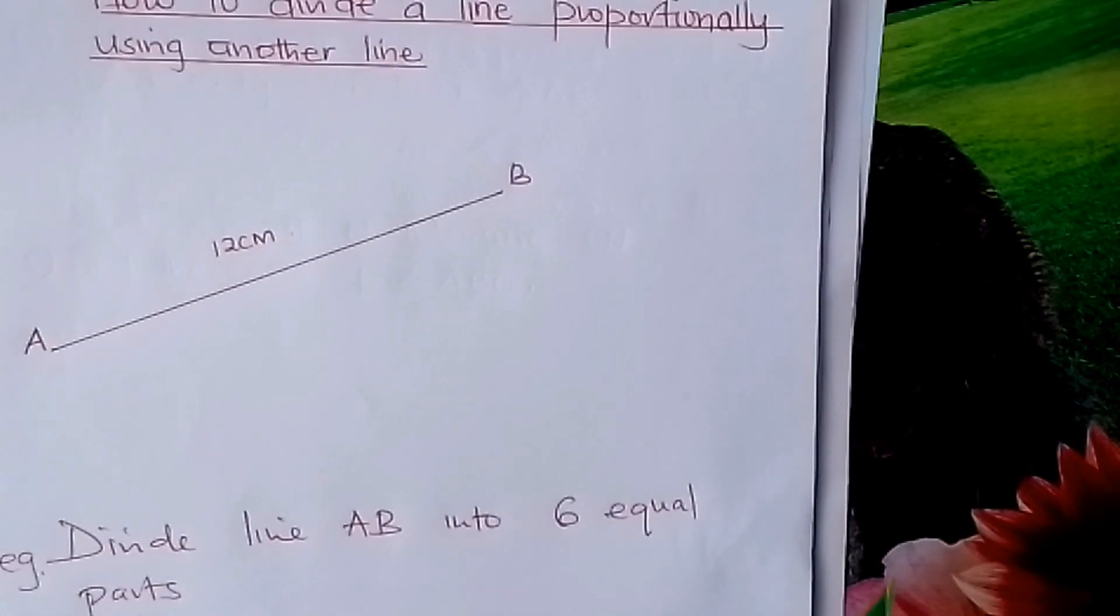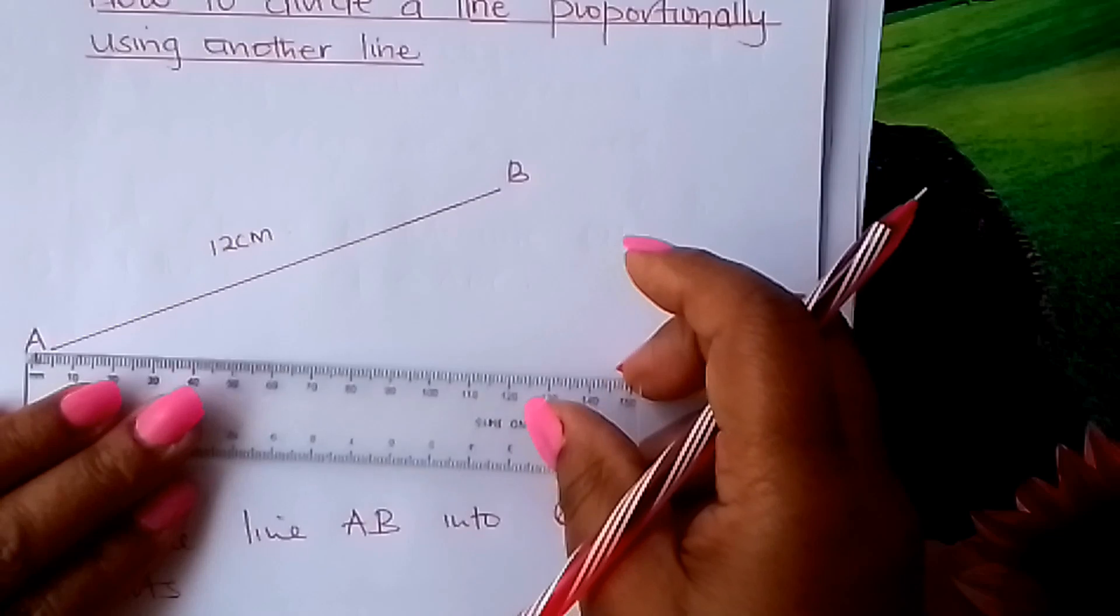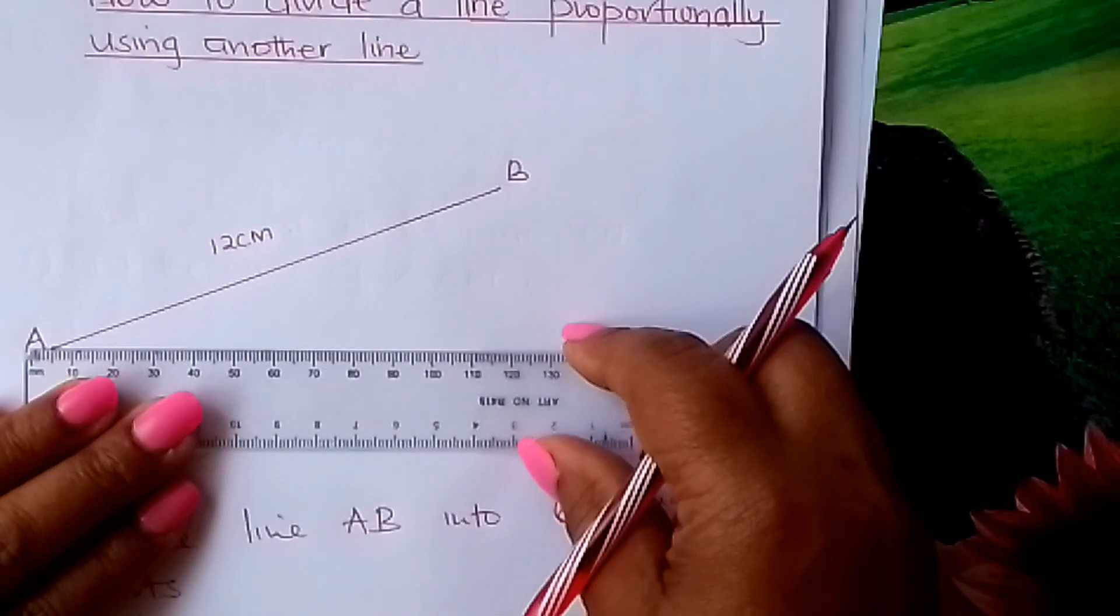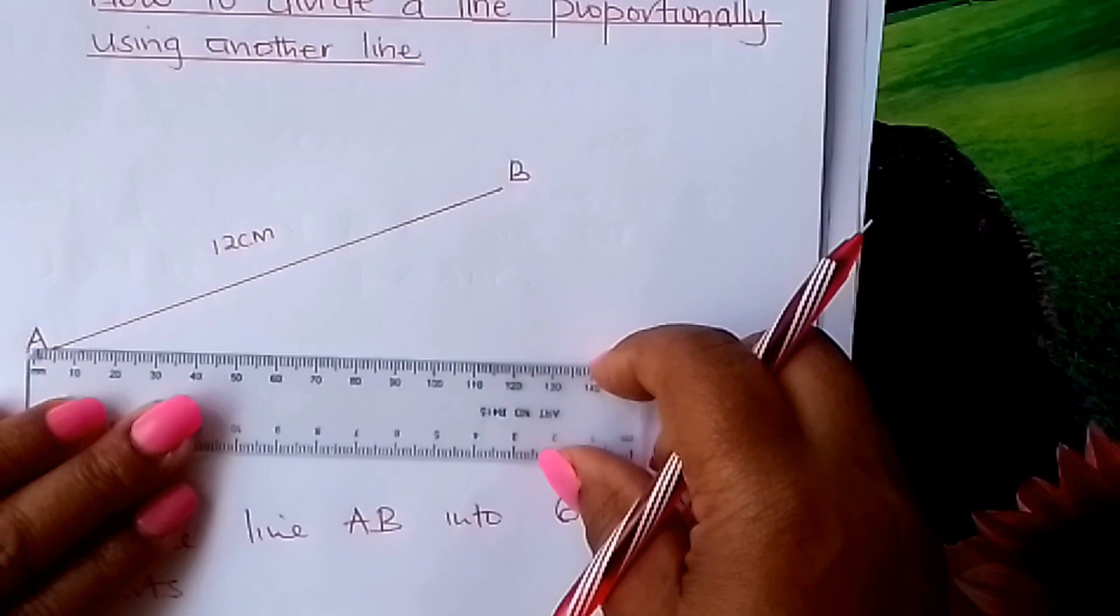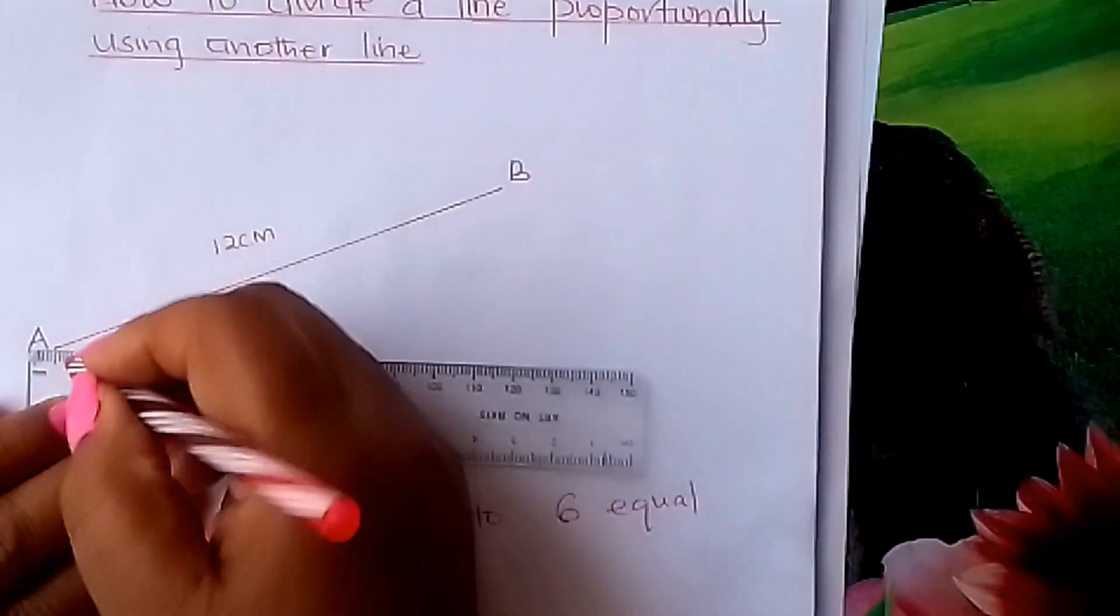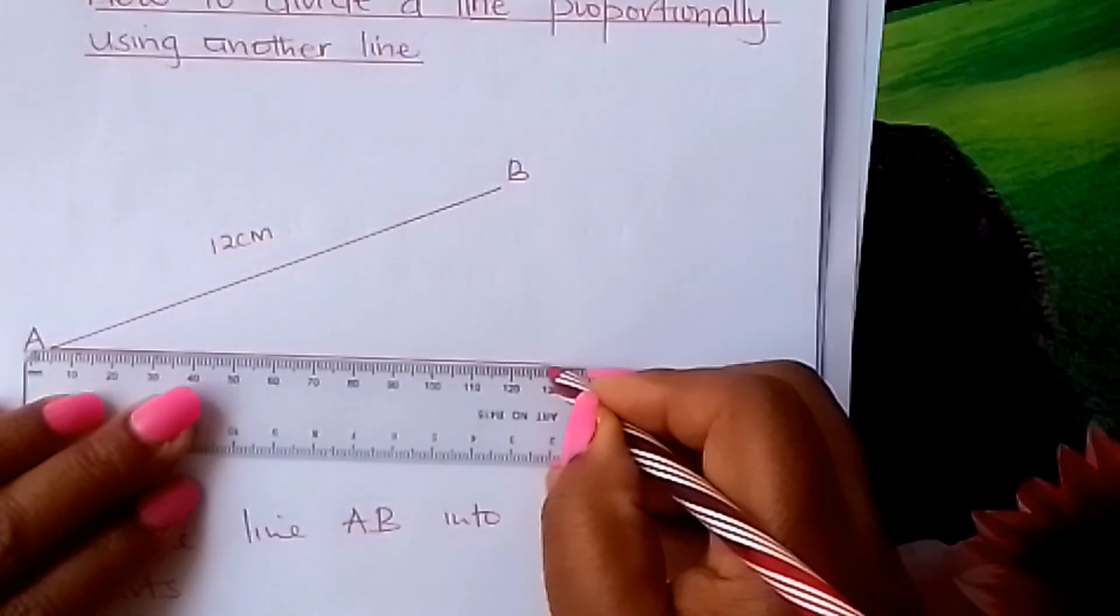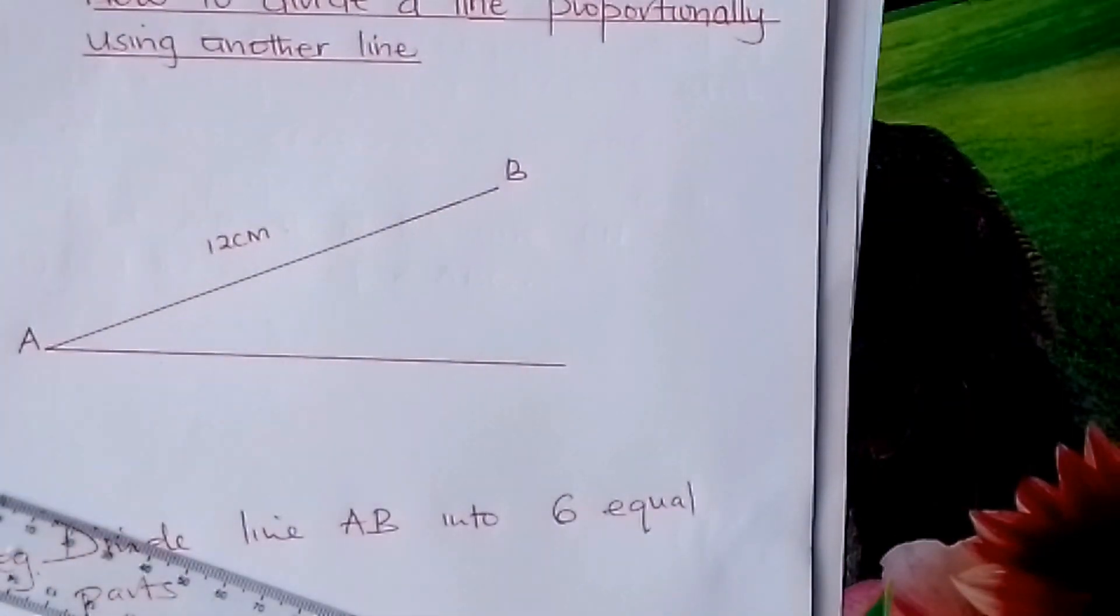You come learner, you go to your line and you draw another line either down here or even up there. So you draw a line here, like that, of any length.